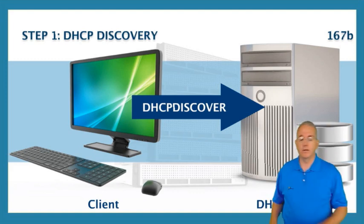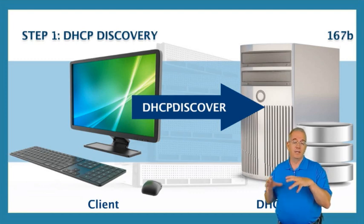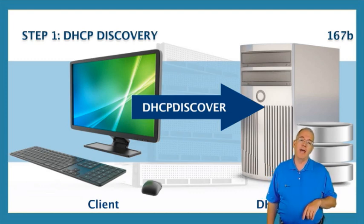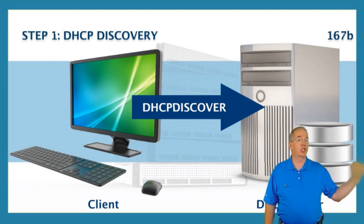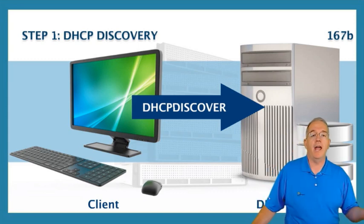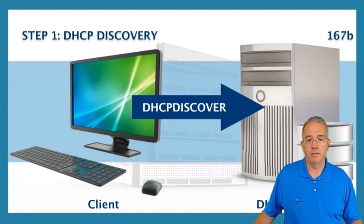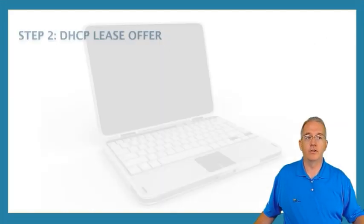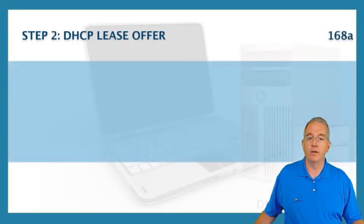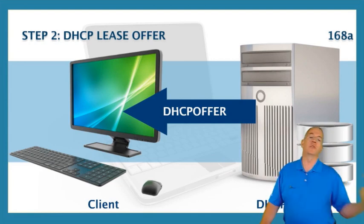The DHCP servers look at the network segment that the request came in on, look into their DHCP database — their scope and range of addresses — and ask: do I have an IP address that I can hand to this machine? If the answer is yes, we go into the second step, which is the DHCP Offer.